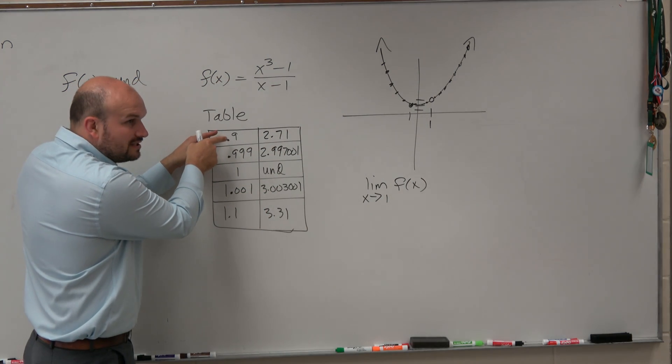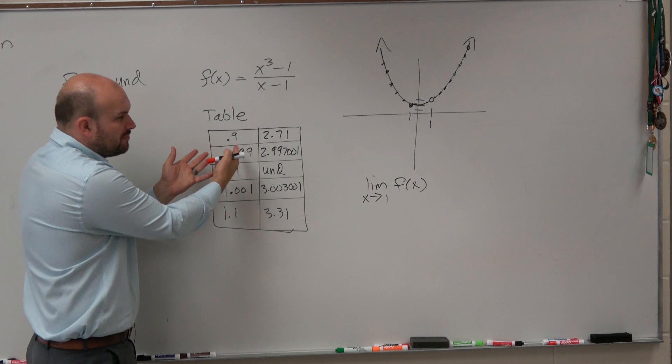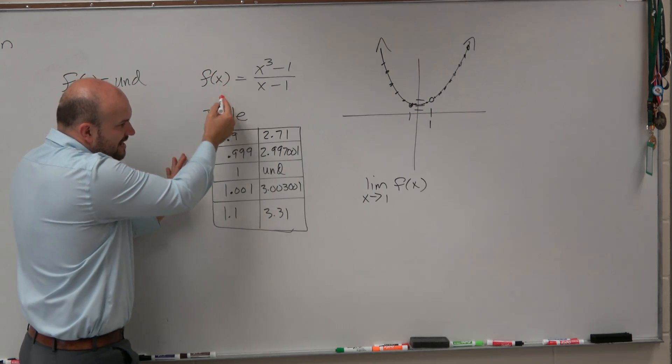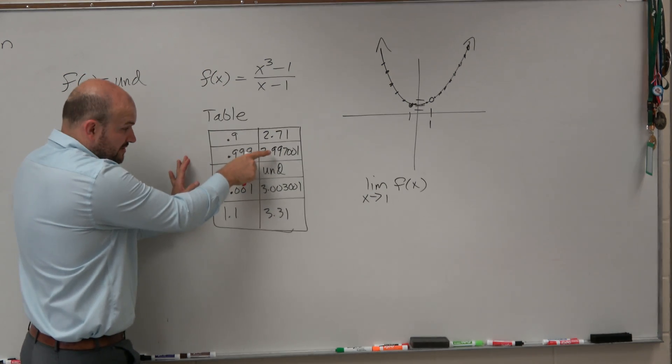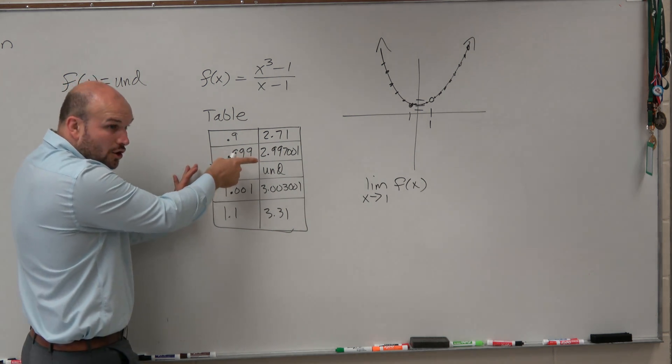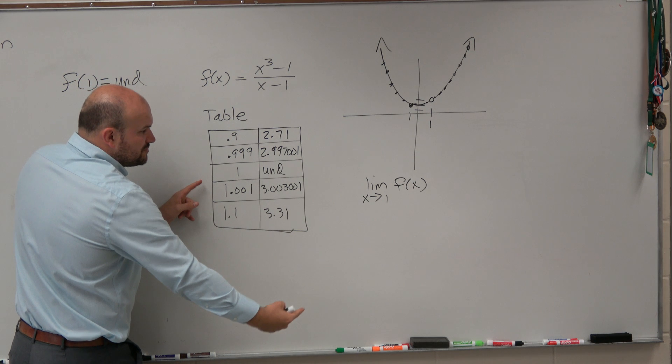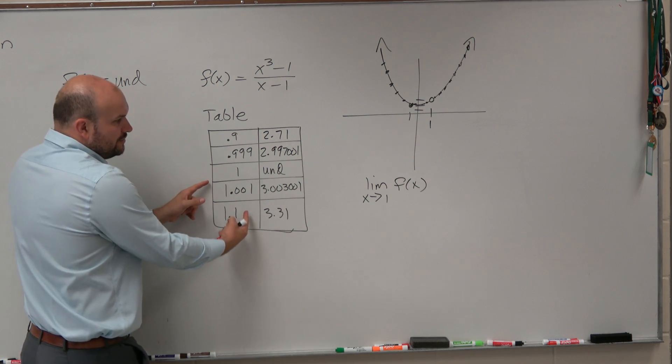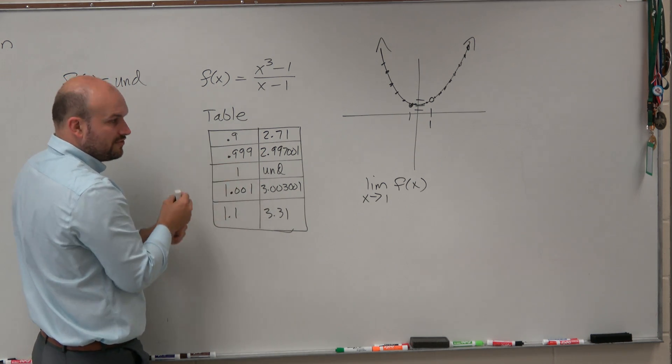As we choose points to the left, and we could have done different points, but as we keep on going to the left, it's getting really close to 3. And if you were to plug in 0.9999999, it's going to almost be 3, right? Same thing, as we choose points coming from the right, you guys can see it's approaching 3.